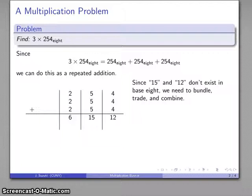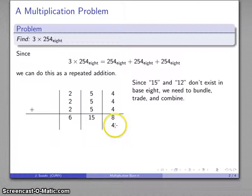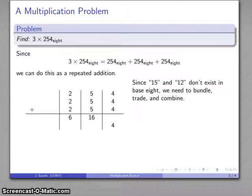Remember, the last thing we have to do is bundle, trade, and combine as necessary. Since we're working base 8, I want to look for sets of 8. I have 12 things altogether, so I know I can find a bundle of 8 and then I have 4 left over. That 12 is now gone. I have a bundle of 8 and 4 left over, and I can trade this bundle for one thing in the next column over. I'll combine those two, and now I have 16.